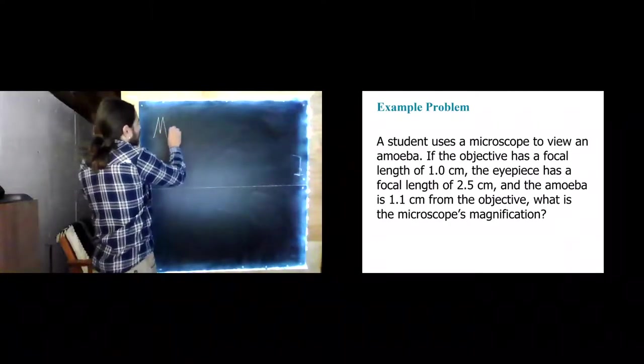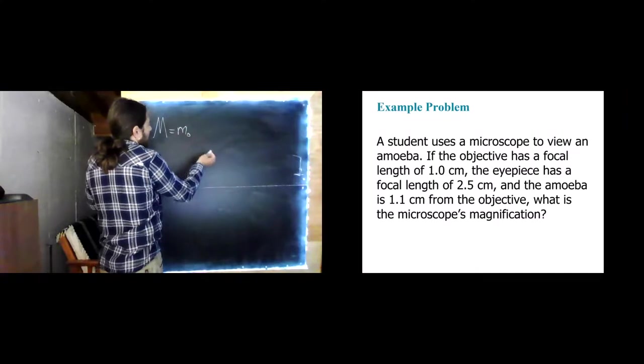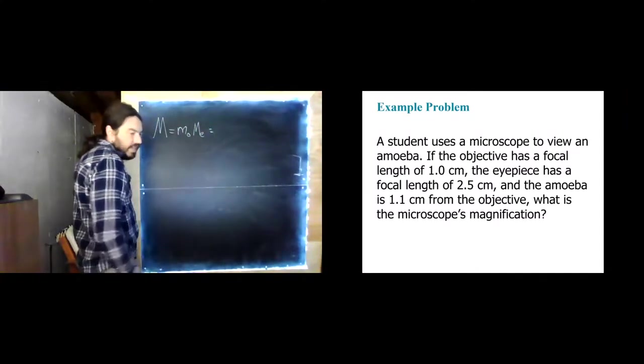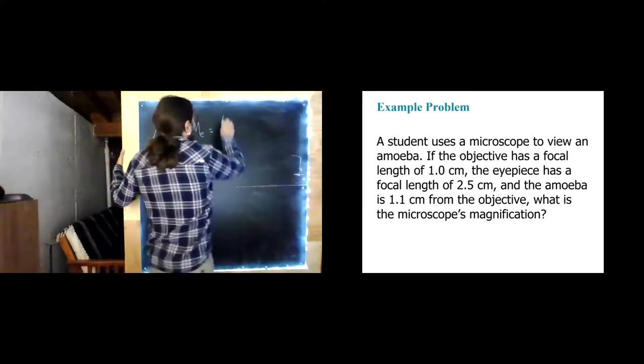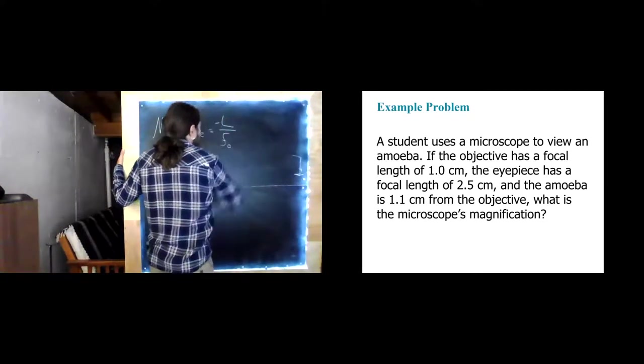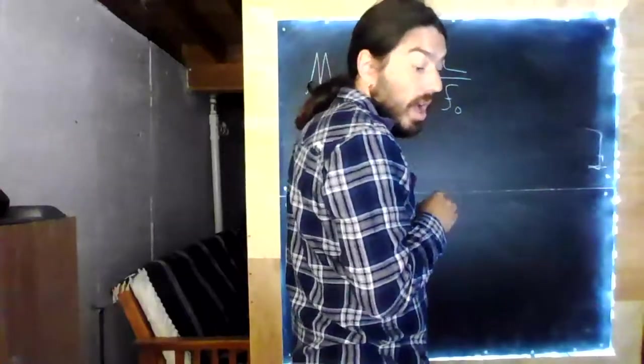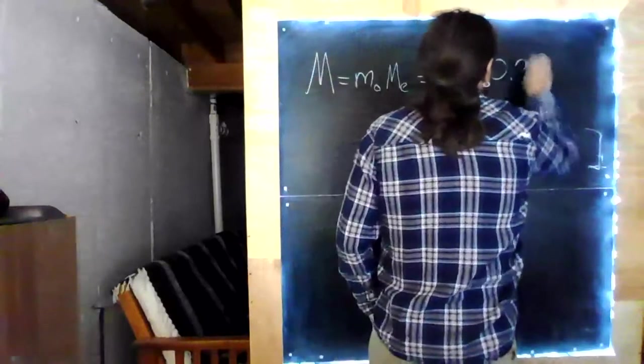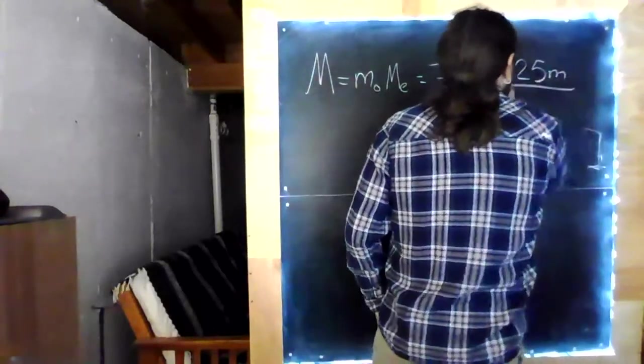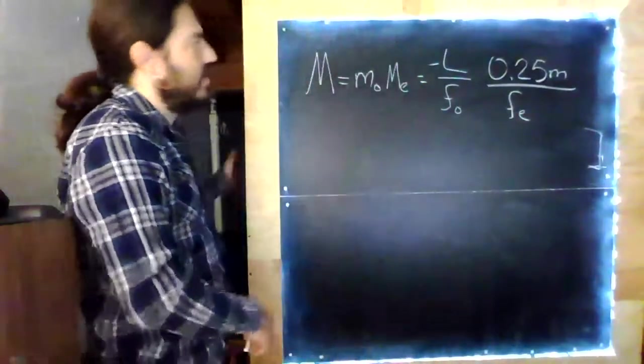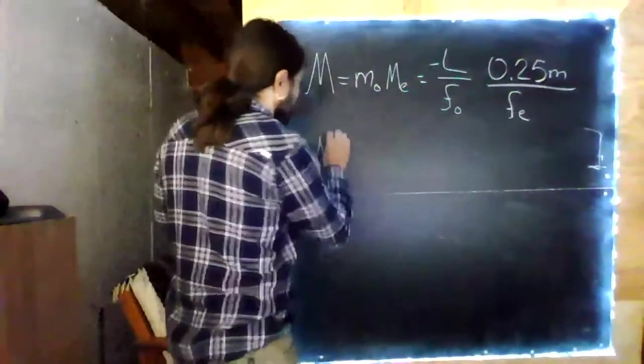But the total magnification is the magnification of the objective times the magnification of the eyepiece. And then we can rewrite this as the length over the objective focal length times 0.25 meters over the eyepiece focal length. And really, at this point, this is a plug and chug.